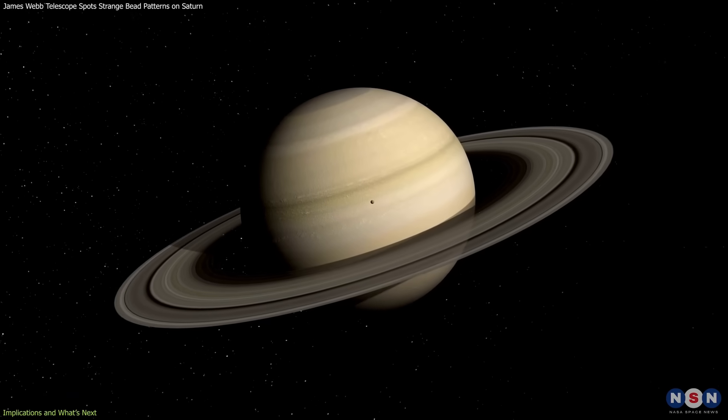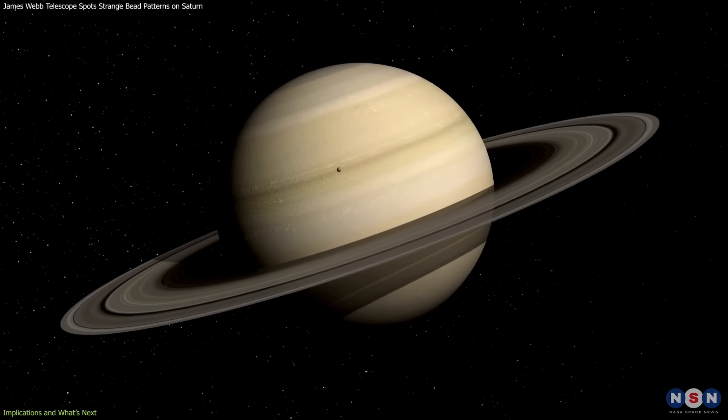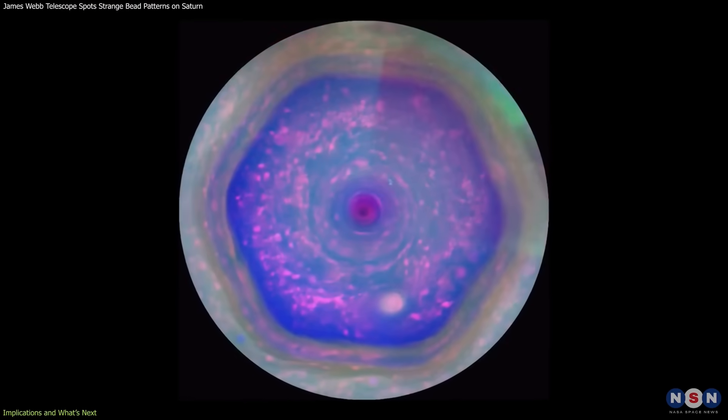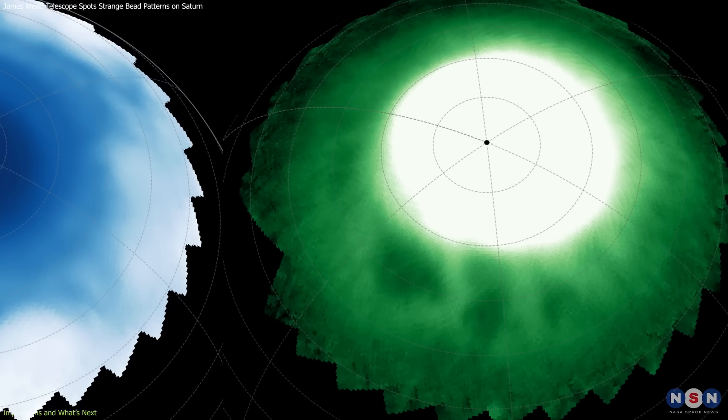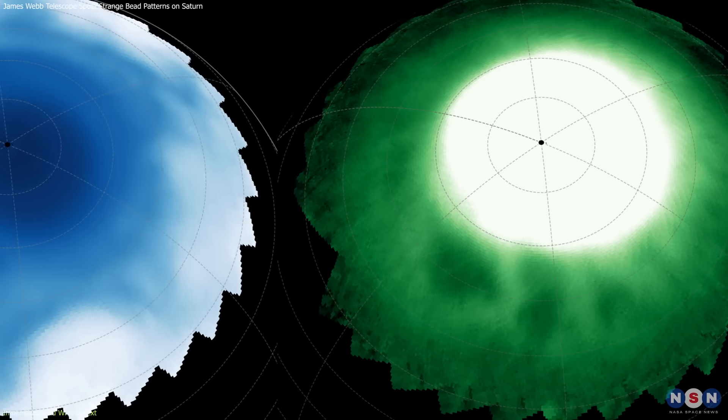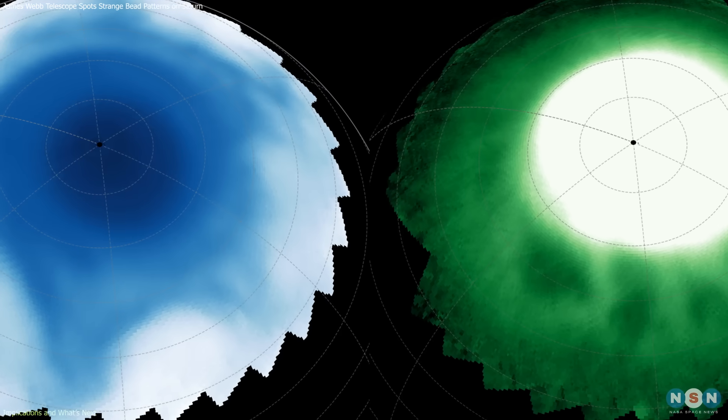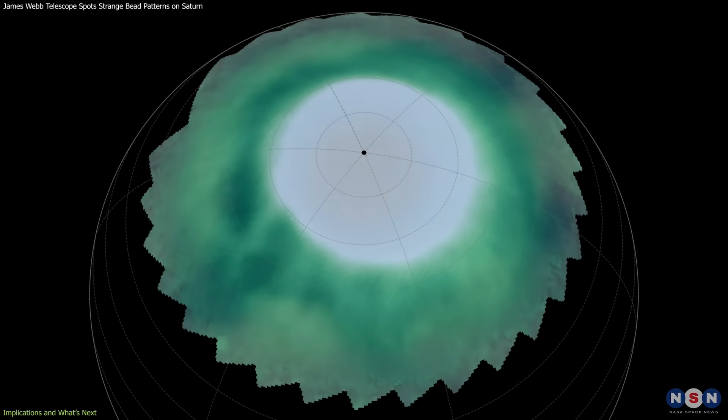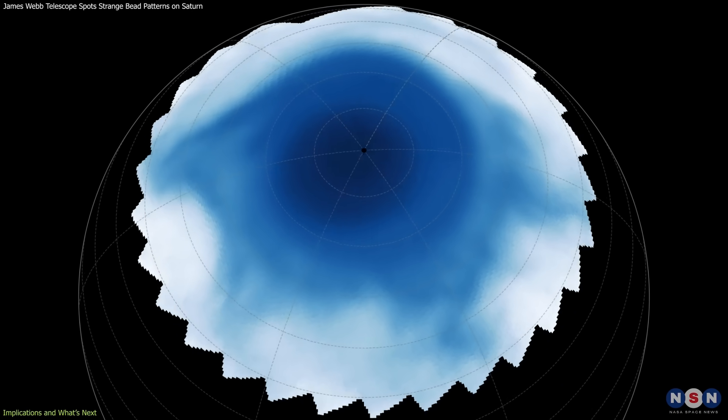For Saturn itself, the findings may shed new light on the iconic north polar hexagon. The hexagon is a stable, deep feature of them. But the discovery of overlying beads and a star pattern suggests that upper and lower layers might be linked. The alignment between features hints at a column of dynamics stretching through them,